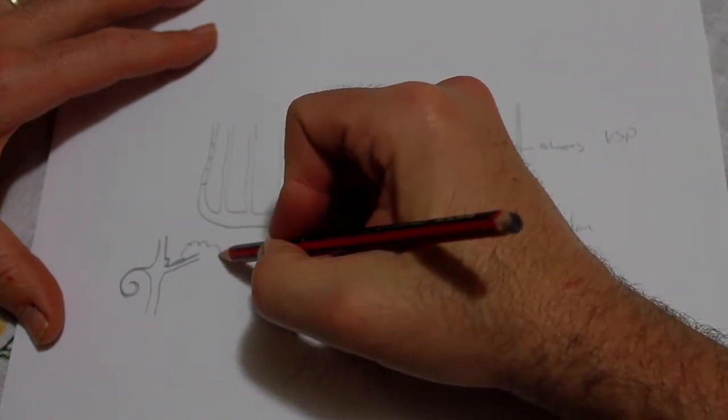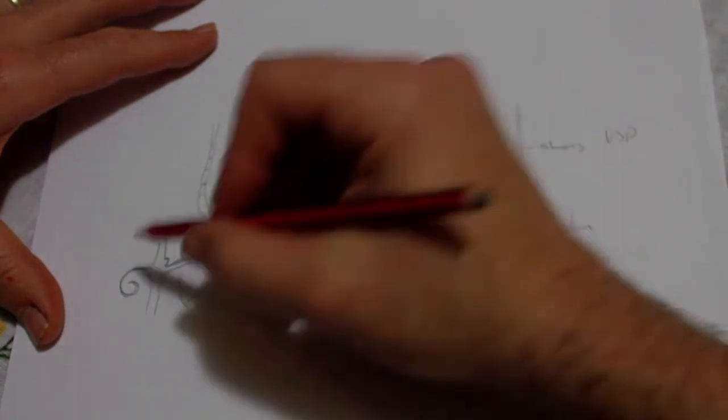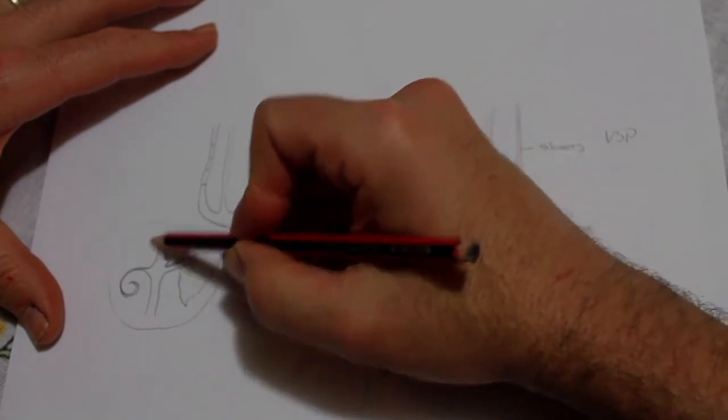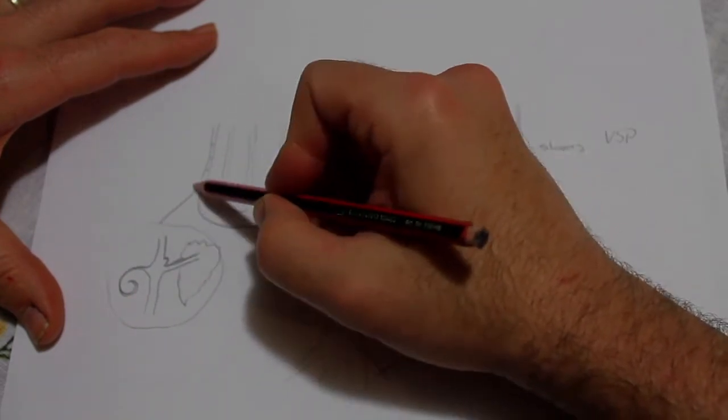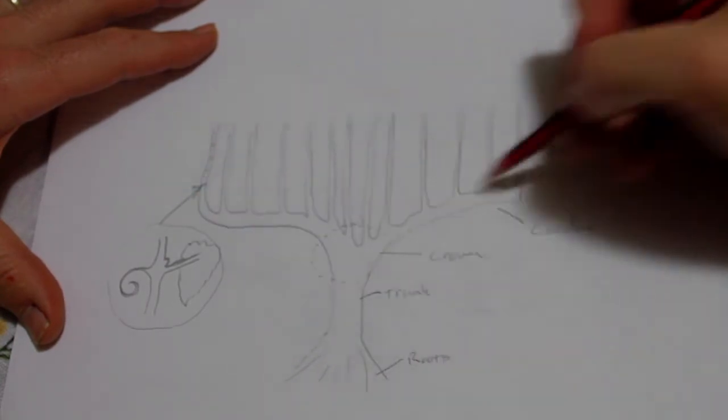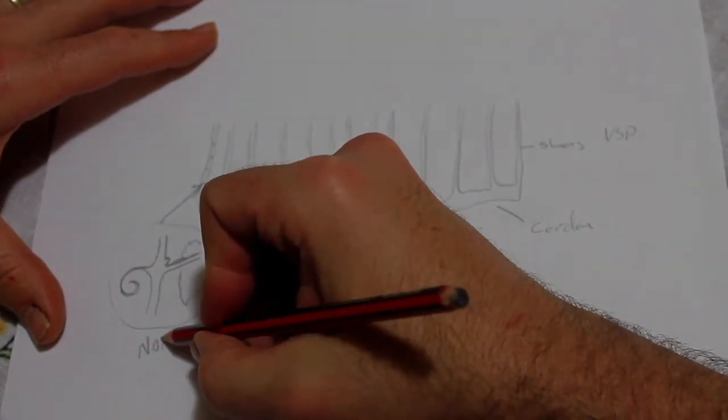On the end of the petiole we have our leaf, so we'll just loosely draw that like that. This whole section here is found in one of these segments along every single cane of the vine, and we call this the node.